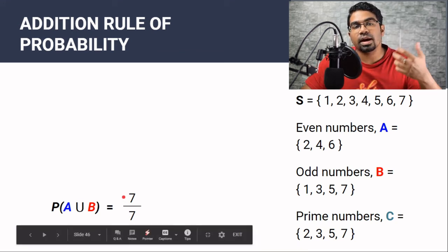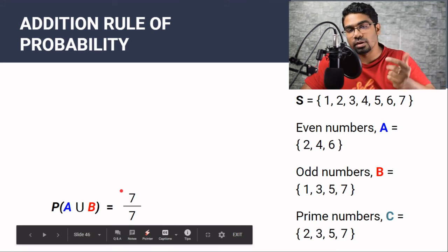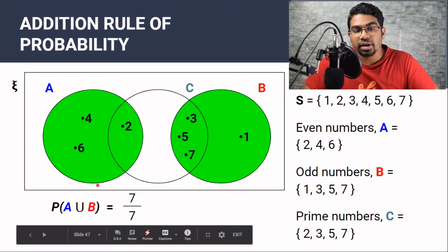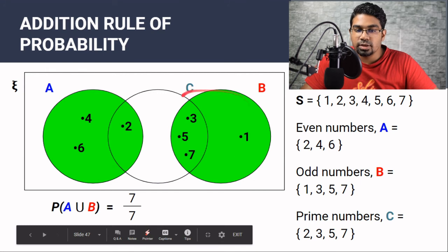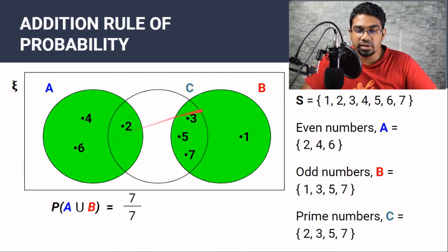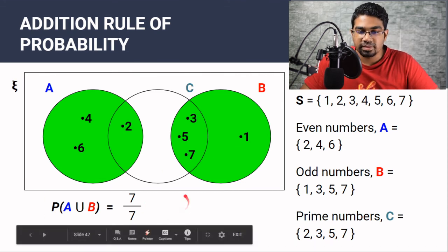That gives 7 out of 7, which makes sense because when we draw a number it is bound to be either an even number or an odd number. Checking with the Venn diagram, A union B contains all 7 elements — 1, 2, 3, 4, 5, 6, 7 — so 7 out of 7. This is correct.